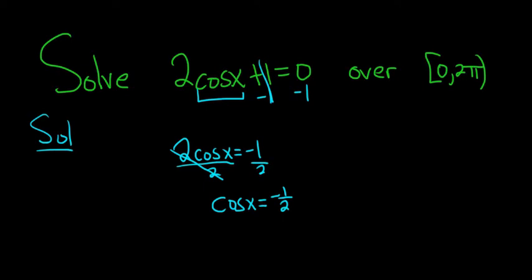We have to find all of the values of x in the interval 0 to pi, where the cosine of x is equal to negative 1 half.